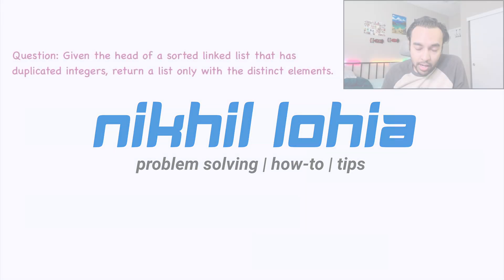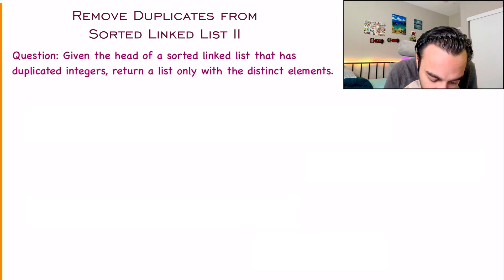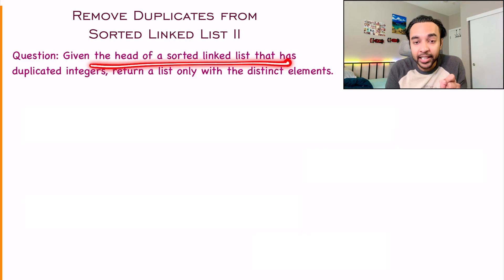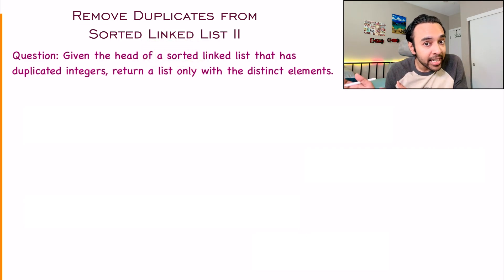After that, we will also do a dry run of the code so that you can actually visualize how all of this is working in action. Without further ado, let's get started. First of all, let's make sure that you understand the problem statement correctly. In this problem, you are given the head of a sorted linked list. The word sorted is very important here as it helps to simplify the solution when we go further.